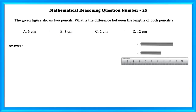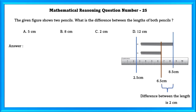Mathematical reasoning question number 25: The given figure shows two pencils. What is the difference between the lengths of both pencils? Both pencils start at the same measurement, so we can find the end point of each pencil and subtract those two values. If we do that, we get 2 centimetres as the difference.